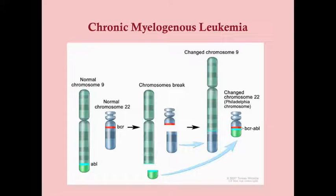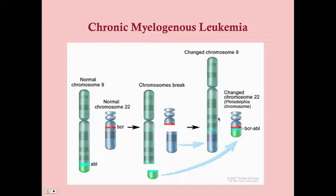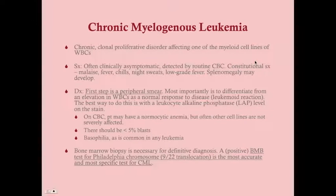For Step 2 and Step 3 exams, you don't need to look at slides or karyotypes to make a diagnosis, but you do need to remember pathologic findings in words. Whenever you see a translocation between 9 and 22, or if they say Philadelphia chromosome, or BCR-ABL positive — that is a diagnosis of CML.